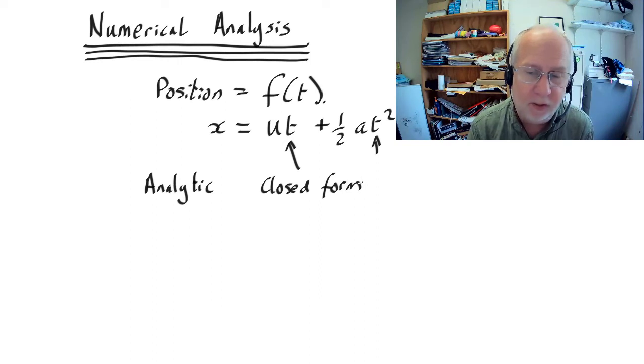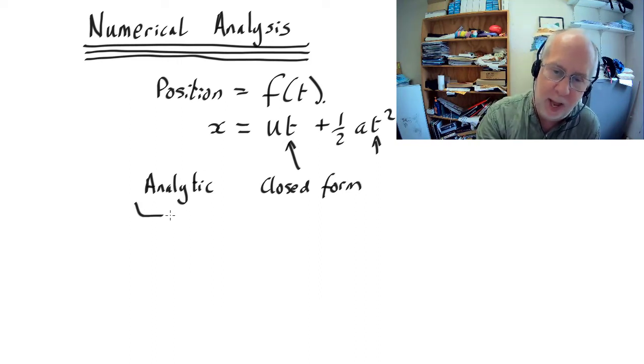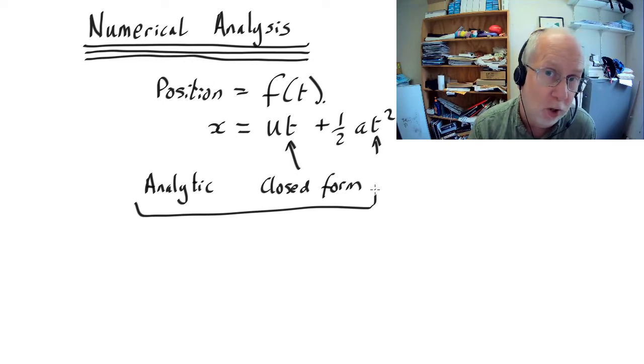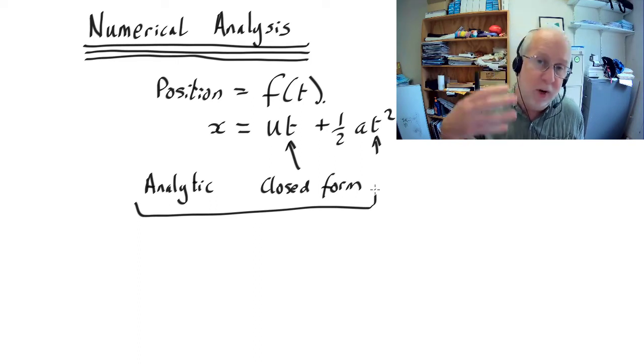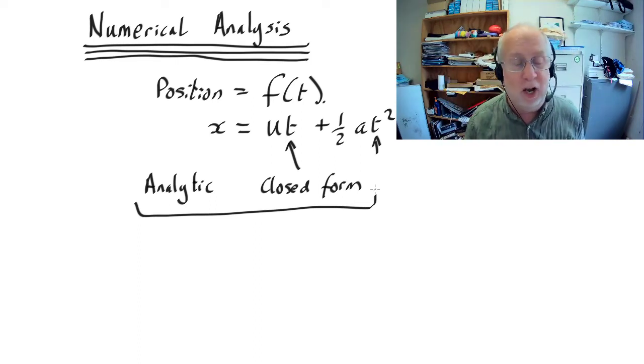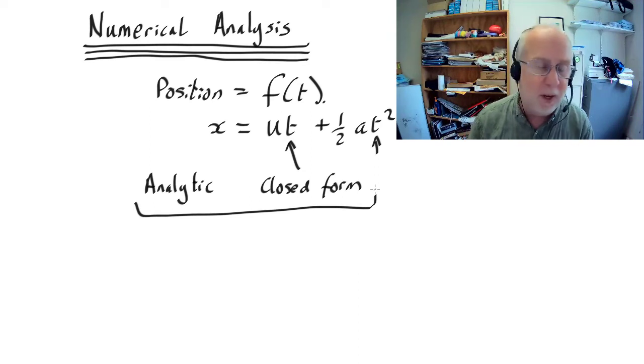The trouble is you can normally only come up with an analytic closed form solution for very simple, very approximate problems. For example, projectile motion when you're firing an object and if you ignore air resistance you can come up with a closed form solution. But by the time you put air resistance in, especially if you allow for the object spinning, if you allow for variation in pressure with altitude, if you allow for Coriolis force, it rapidly becomes not merely painful but actually mathematically impossible to come up with a closed form solution. And that's where numerical analysis comes in.